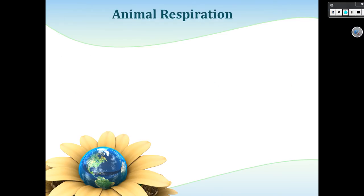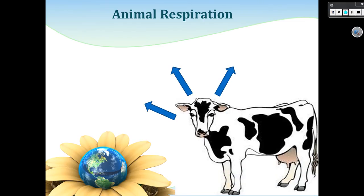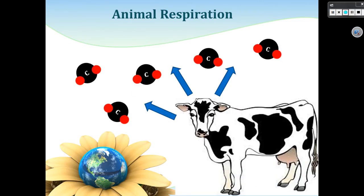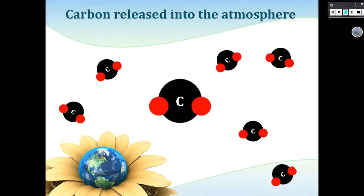There are a few ways that a carbon atom is transferred from one organism to another, into the atmosphere and then into the soil. The carbon is first released by animal respiration. The carbon atom is then released into the atmosphere in the form of carbon dioxide.